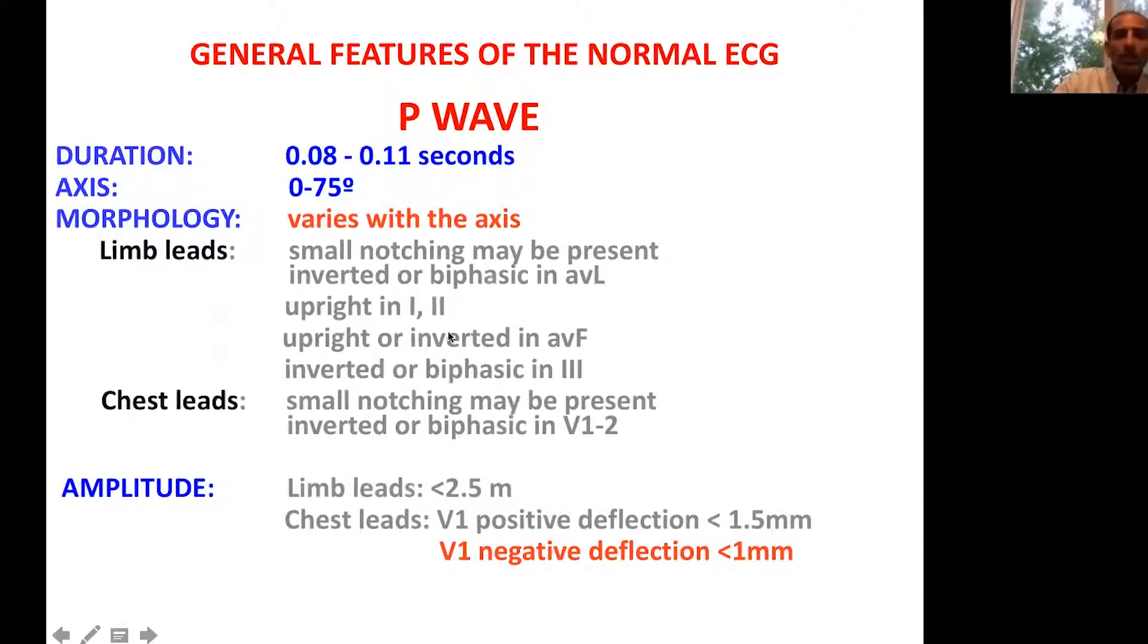In the limb leads, usually you will have some notching, and these P waves in sinus rhythm are upright in lead 1 and 2. They should be upright in AVF. There might be some notching that you can notice in V1 and V2. In the limb leads, the amplitude is less than 2.5 small boxes, and on the precordial leads, it would be less than 1.5 millimeters.